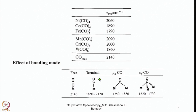In terminal binding of CO to a metal, the range is around 1850 to 2120 cm⁻¹. When CO acts as a bridging ligand holding two metal centers, it drops considerably to 1750–1850 cm⁻¹. When it bridges three or more metal centers, the stretching frequency drops further to around 1620–1730 cm⁻¹. This means more and more bridging leads to CO behaving almost like the ketonic carbonyl group we encounter in organic chemistry.